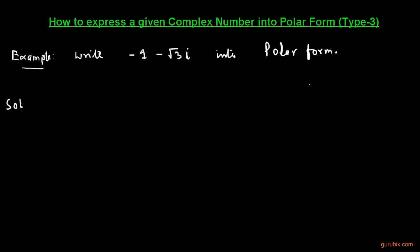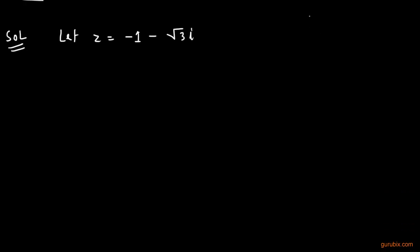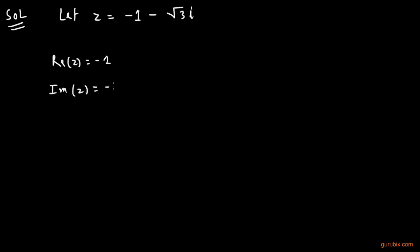So let us see how to solve this example. First of all, we shall let the given complex number equal z. Therefore z equals minus 1 minus square root 3 iota. This means the real part of z is minus 1, and the imaginary part of z is minus square root 3.